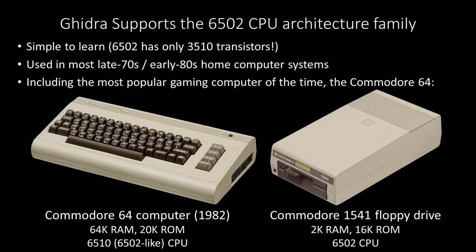Ghidra supports the family of 6502 processors. This was a very important processor in the late 1970s and early 80s, especially for home computer systems. It is simple to learn. The chip itself, the 6502, only has 3,500 transistors on it, so it looks great on the poster.